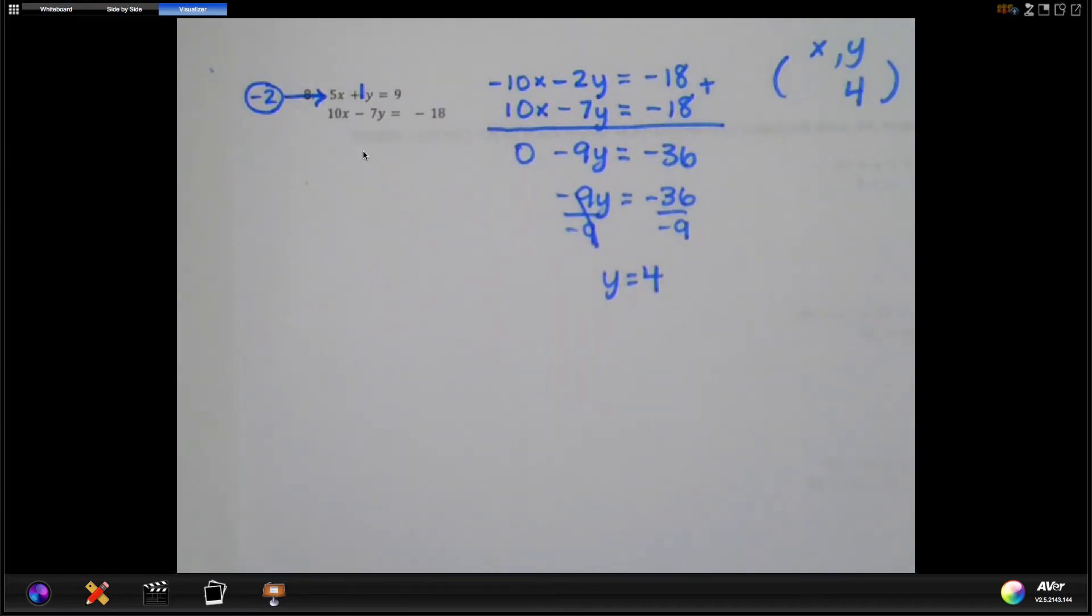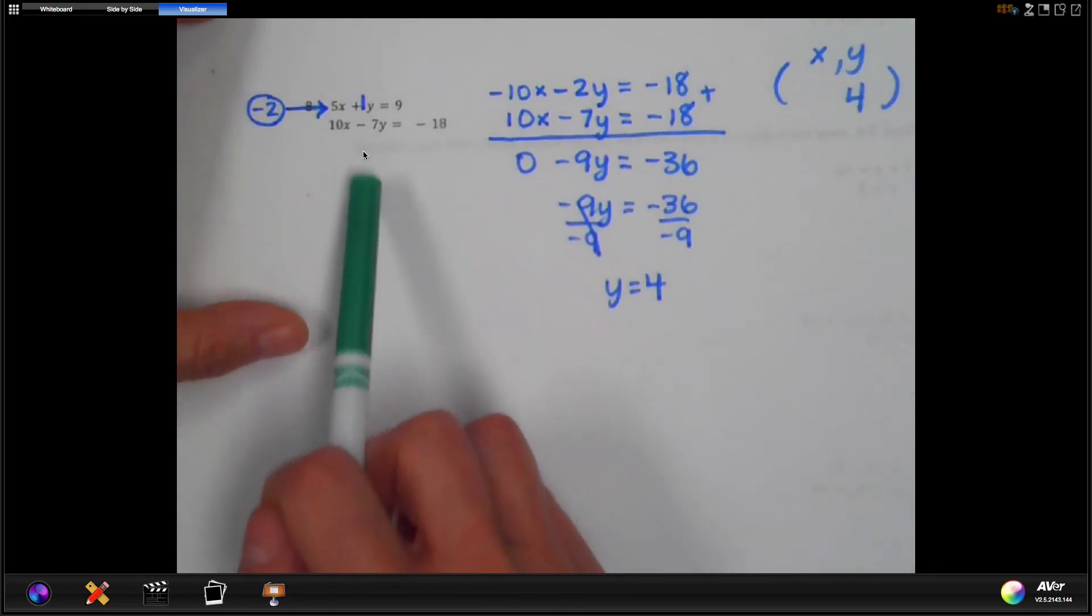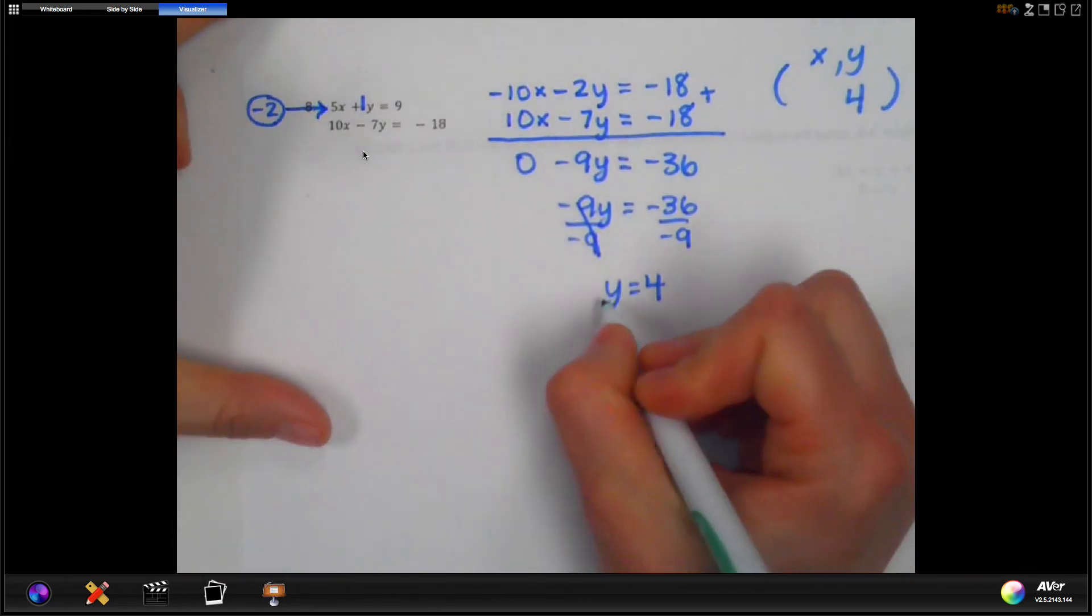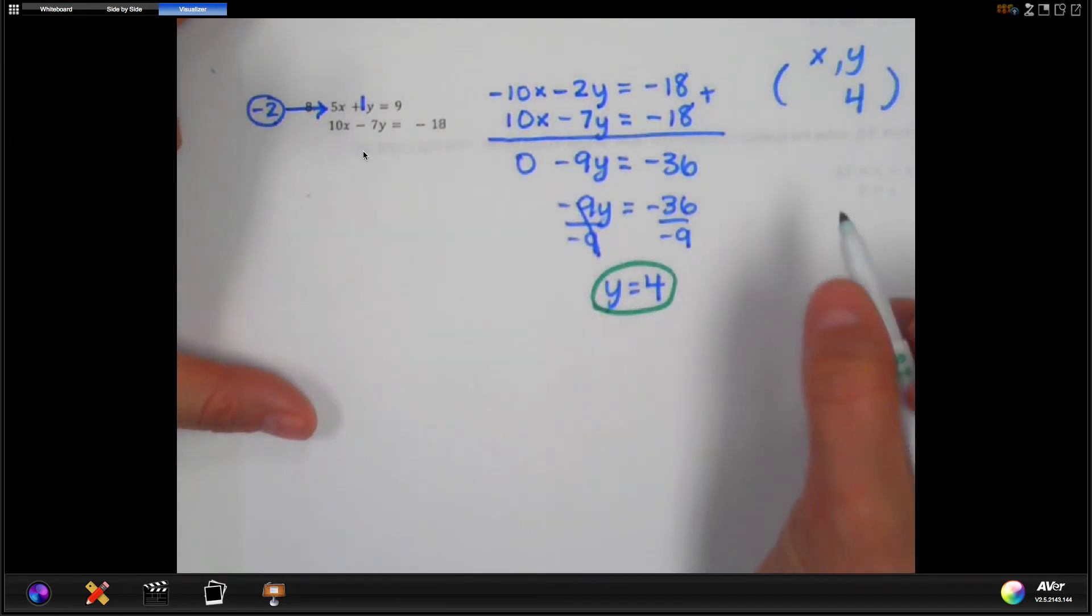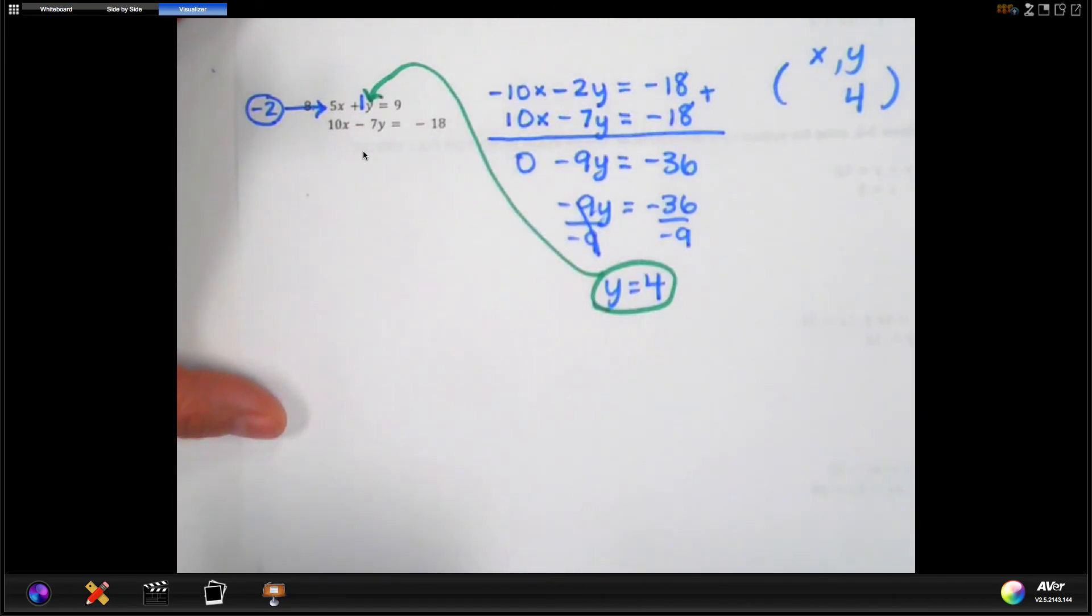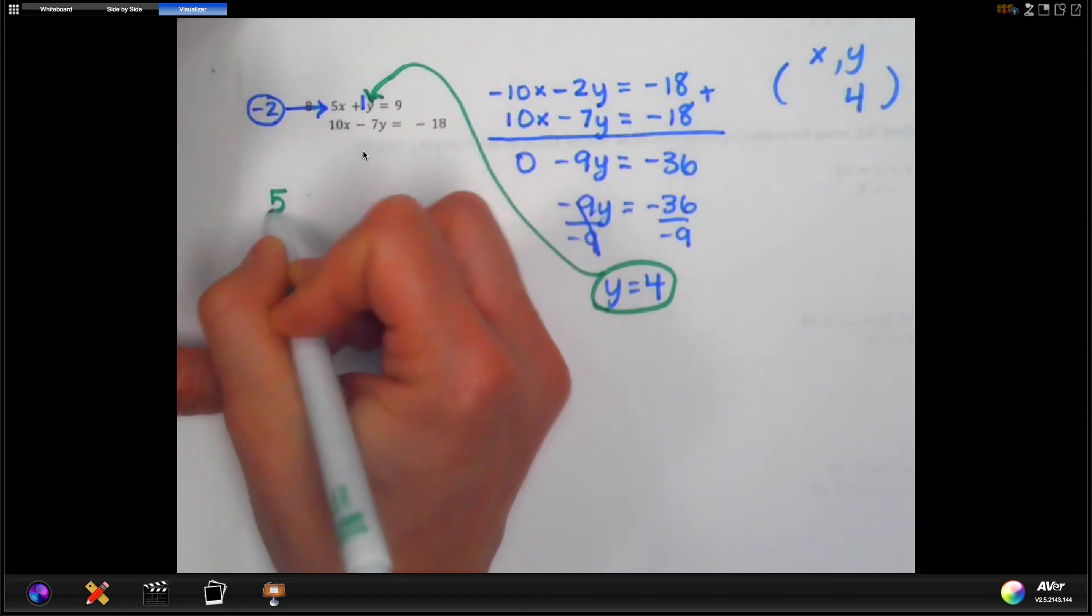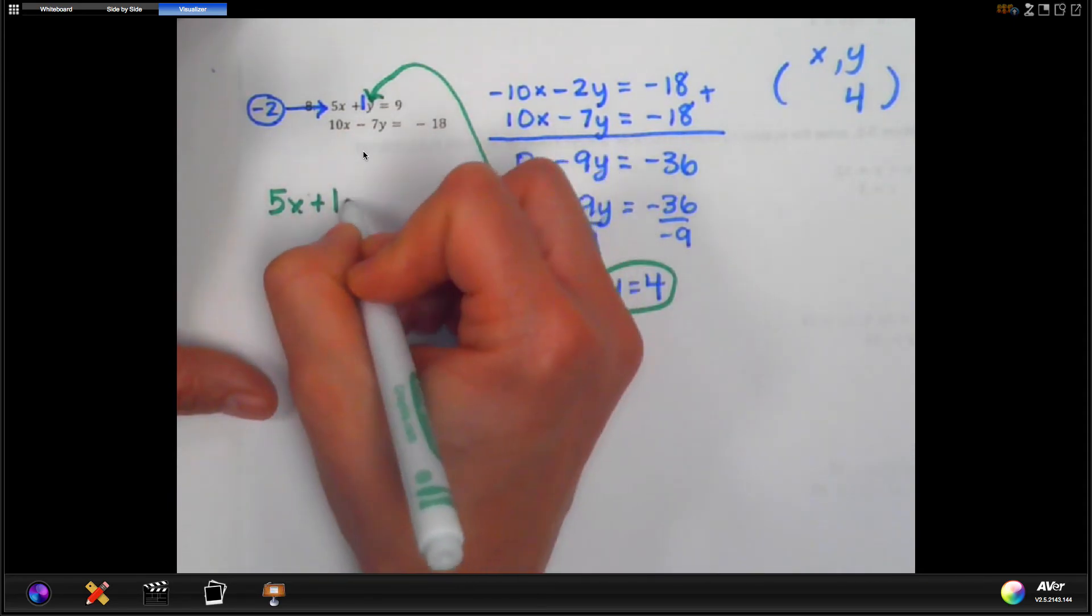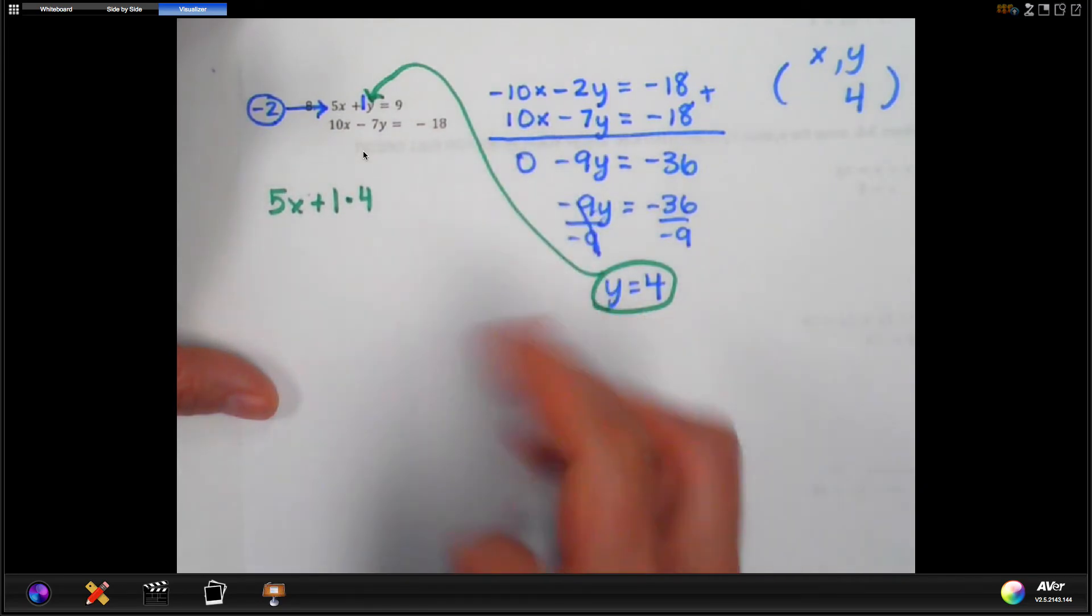I'm going to use the top one. So this time, I got a y value of 4. So I'm going to substitute that in for y, not x. Okay, so 5x plus 1, not y now, times 4 is what I'm going to use, equals 9.